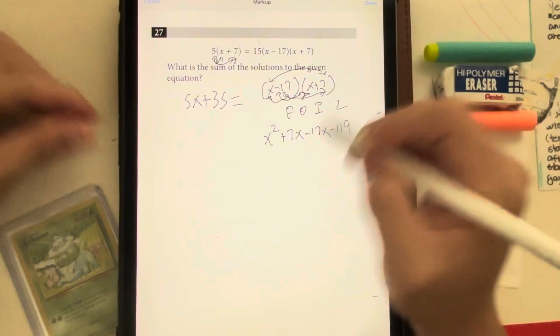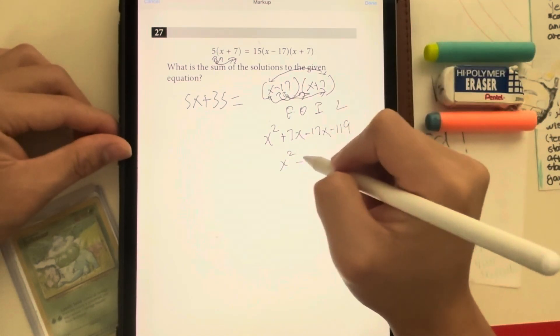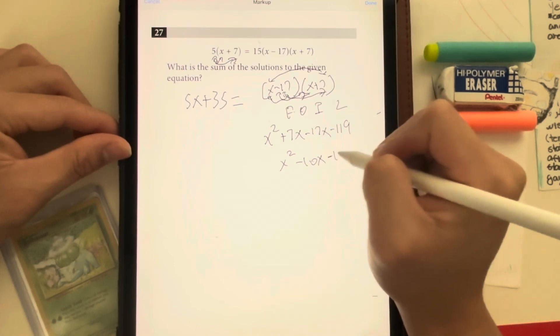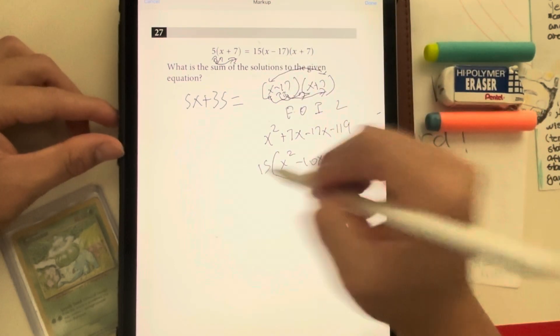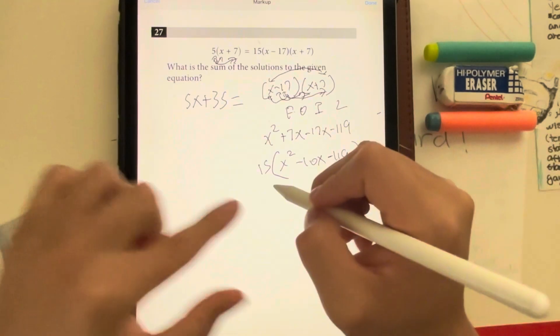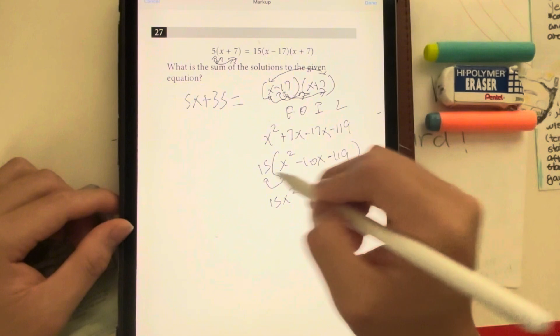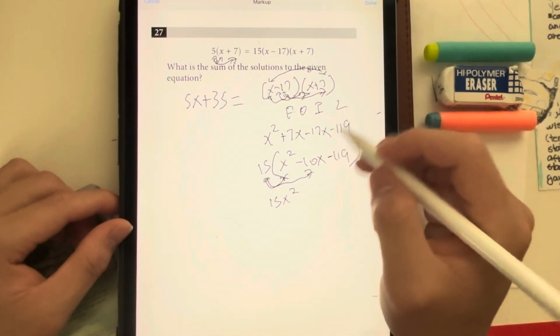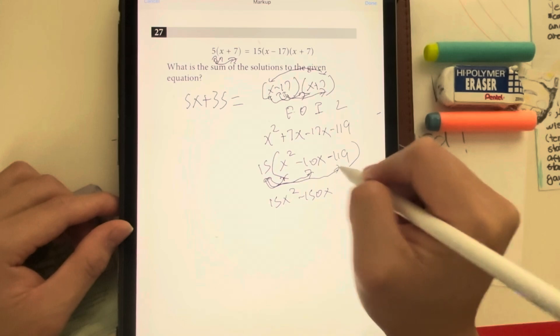We can combine like terms, giving me x squared 7x minus 17x gives me minus 10x, and then minus 119. And then we have this times 15 in the front. So when we do that, we distribute the 15 to x squared, which gives us 15x squared, 15 to the negative 10x, which is going to give us negative 150x, and 15 to the negative 119.